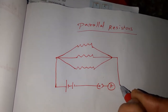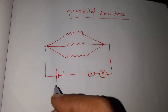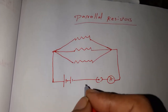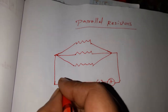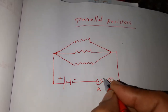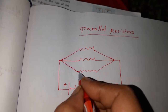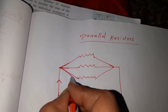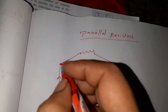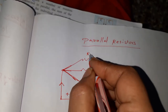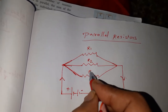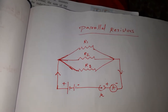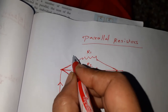In the series connection, we are seeing that the current I is the same — passing of current is the same. But the potential difference V is different for each resistance. Here, the current flowing from negative to positive will be separated at this point. So the current I will be varied for each resistance. In series connection, the current passing through the resistance is the same, but here the current passing through the resistance is separated.